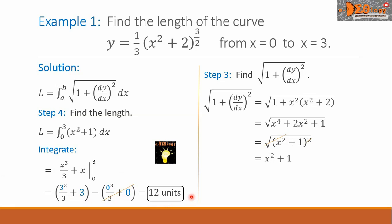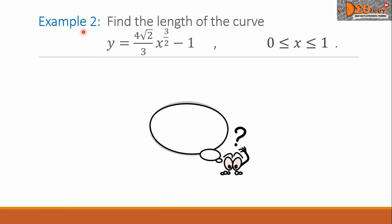This is the arc length — this is the final answer. Example 2: find the length of the curve y equals 4 square root of 2 all over 3 times x raised to 3 over 2, minus 1, where x is between 0 and 1.